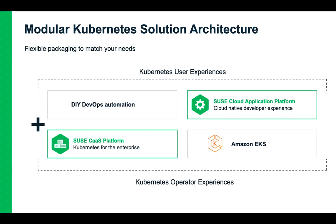Although SUSE has its own Kubernetes distribution — SUSE CAS Platform — we recognize that some organizations already have Kubernetes or get it from a cloud provider like Amazon EKS. So we made this flexible: you can install it on a completely SUSE stack or mix and match. We have deep support for Amazon EKS, Azure AKS, and Google GKE, as well as CAS Platform. If it meets the minimum requirements, SUSE Cloud Application Platform will run on any Kubernetes.